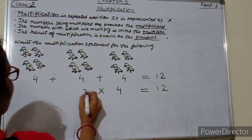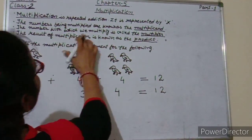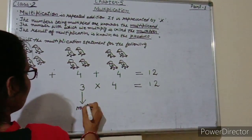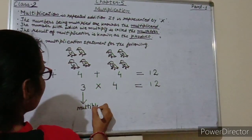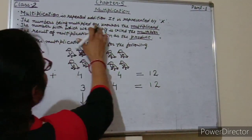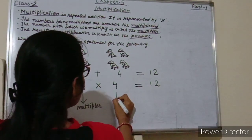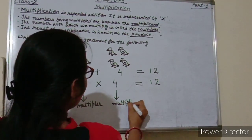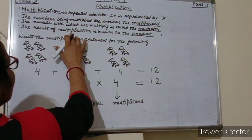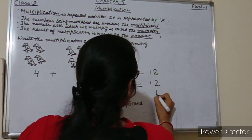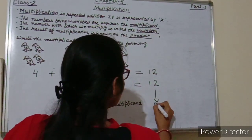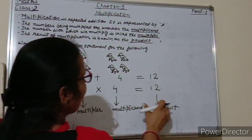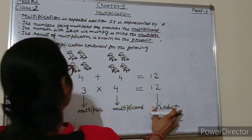Now students, 3 is known as the multiplier — the number with which we multiply is called the multiplier. The numbers being multiplied are known as the multiplicand, so 4 is the multiplicand. The result of multiplication is known as the product, so the answer 12 is the product.